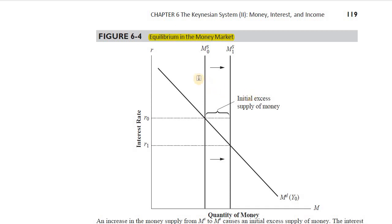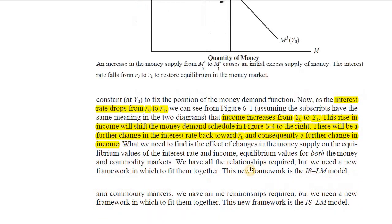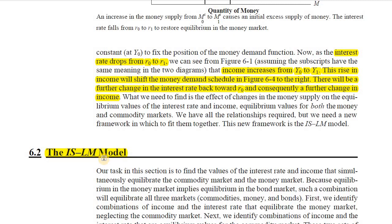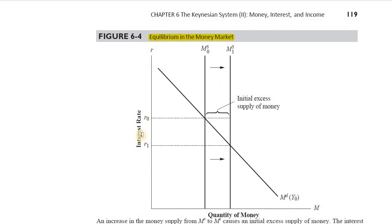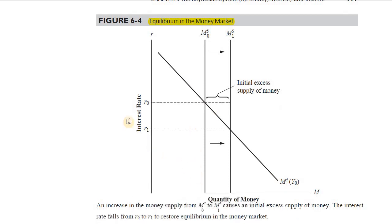Up till now we have seen the equilibrium in the money market — how it was arrived at, which was really simple. In today's lecture we will be talking about the IS-LM model. But why do we need to talk about such a difficult thing? We already have a simplified model where the equilibrium level of interest rate is found simply by the intersection of money demand and money supply, and from that we get investment, then aggregate demand, then equilibrium level of income. So why do we need to complicate things?